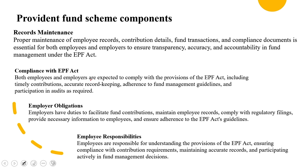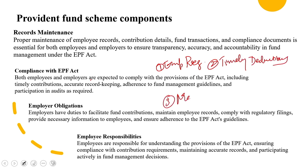Both employees and employers are expected to comply with the provisions of the EPF Act, including timely contribution, accurate record keeping, and adherence to fund management guidelines. Employer responsibilities for ensuring compliance include employer registration, registering eligible employees with the EPF authority, timely deductions, maintaining accurate records, and filing of returns within stipulated deadlines. These are some of the critical factors when it comes to compliance.